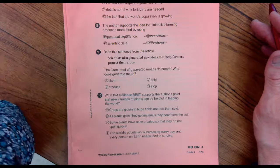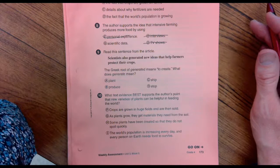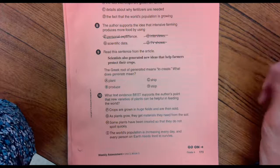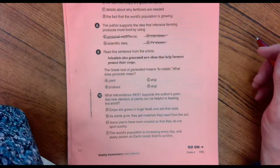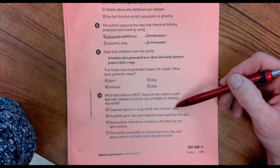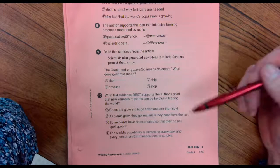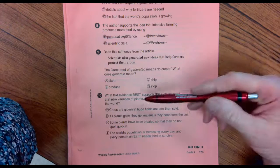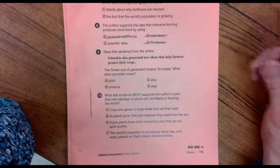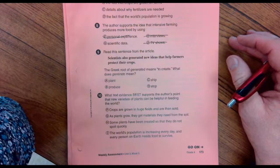And number ten. What text evidence best supports the author's point that new varieties of plants can be useful in feeding the world? Crops are grown in huge fields and then are sold. As plants grow, they get materials they need from the soil. Some plants have been created so they do not spoil quickly. The world's population is increasing every day and every person on earth needs food to survive.